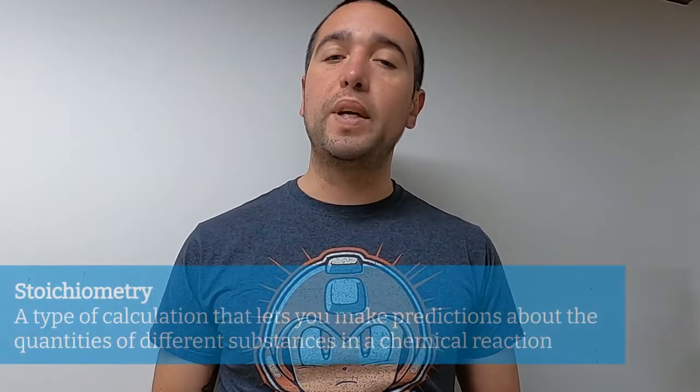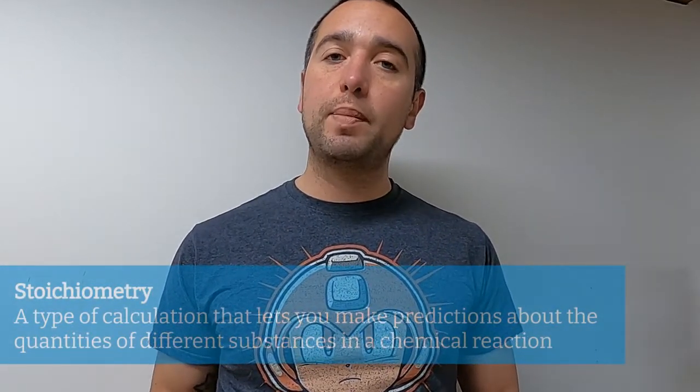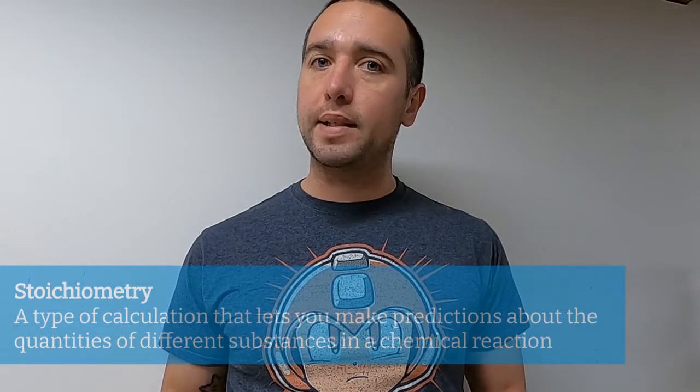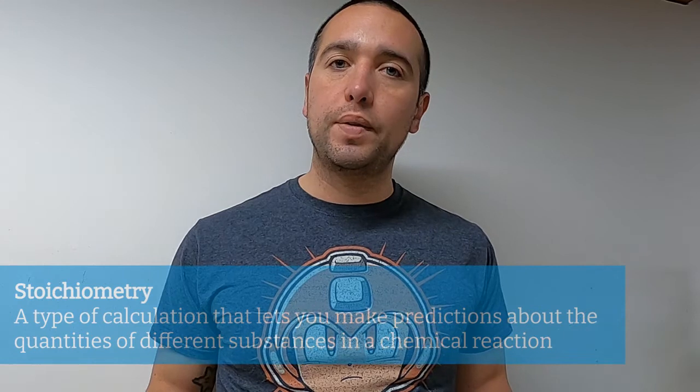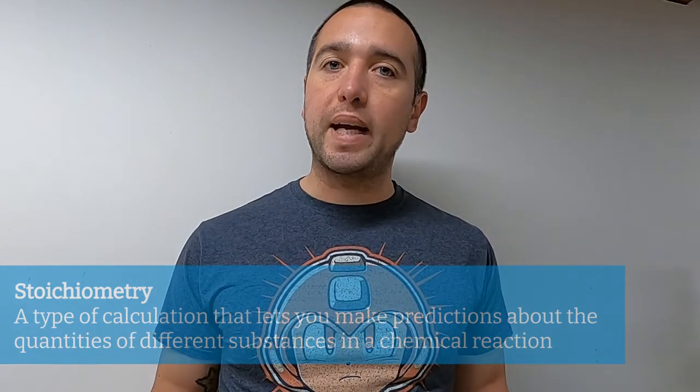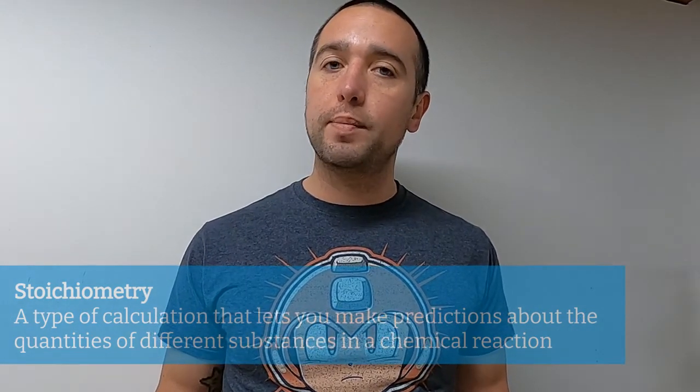So every stoichiometry problem is going to be giving you information on one substance that participates in a reaction, whether it's a reactant or product, and it will be asking you about another substance in the reaction. It might be a reactant or product, depending on the wording. And so you've got a given substance, something you have information given to you on, and a desired substance, the thing that the information is desired about.